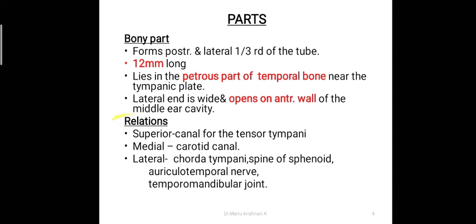Try to remember at least one relation from each part. The superior relation of the bony part is the canal for the tensor tympani — we have discussed the muscles of the middle ear cavity: tensor tympani and stapedius. Tensor tympani passes superior to the bony part of the Eustachian tube. Medially it is related to the carotid canal; laterally to the chorda tympani, spine of sphenoid, auriculotemporal nerve, and the temporomandibular joint.